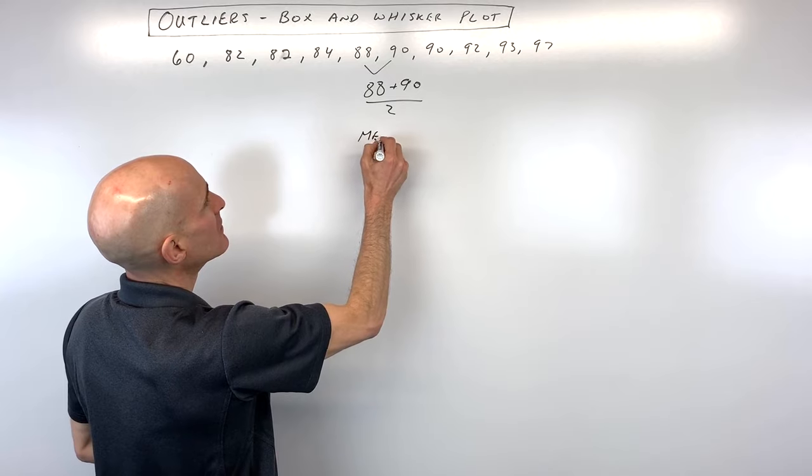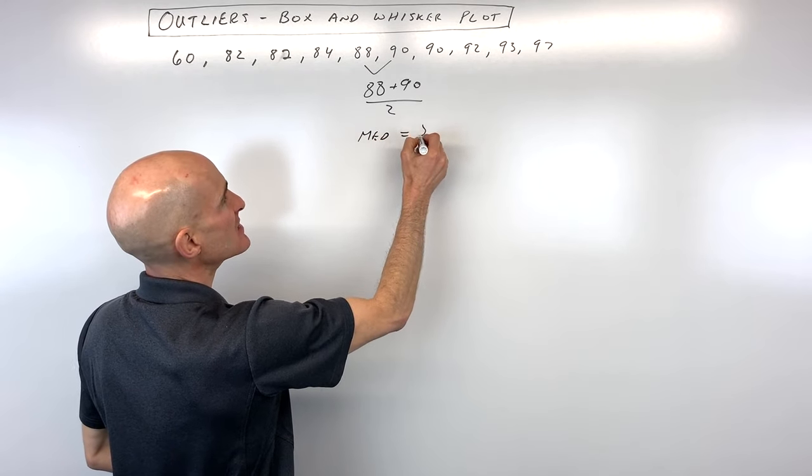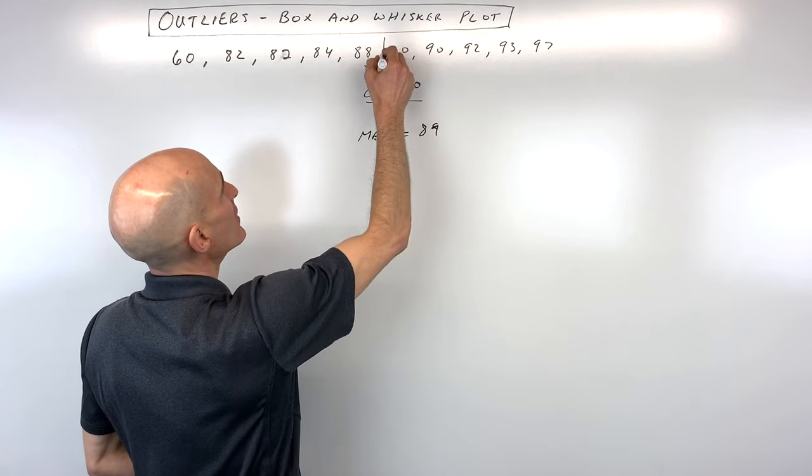So it's basically the number that's halfway in between 88 and 90. So that means that our median is 89, and that's going to be right here.